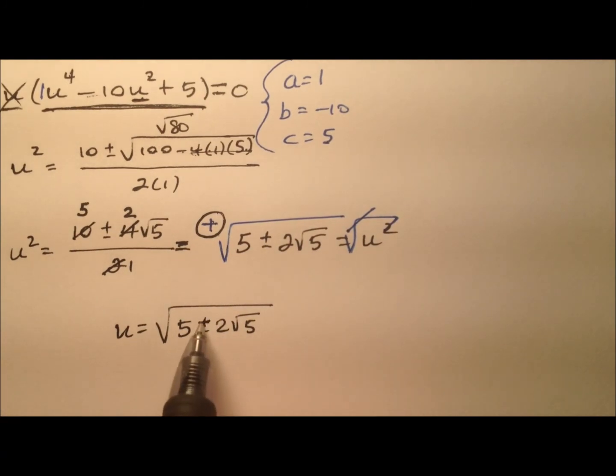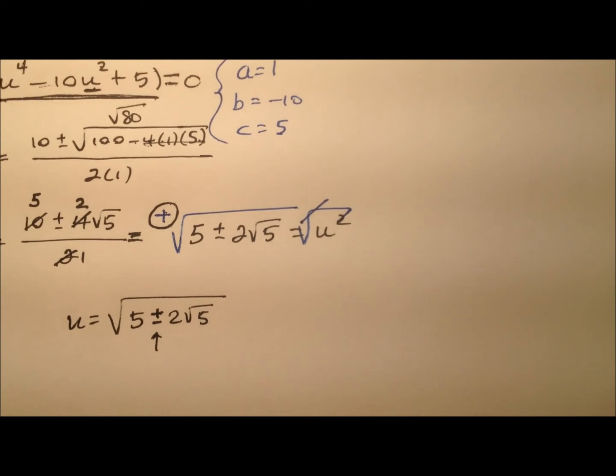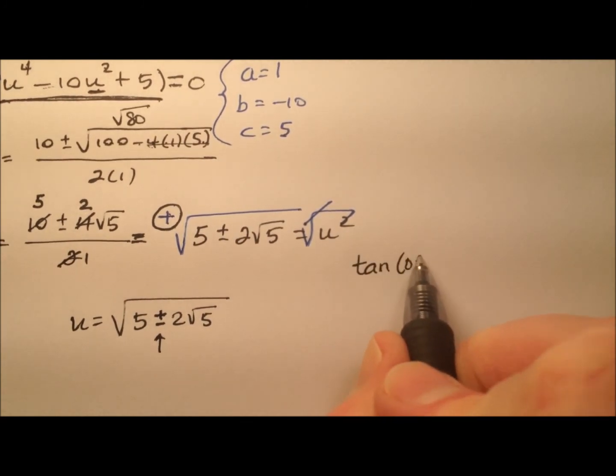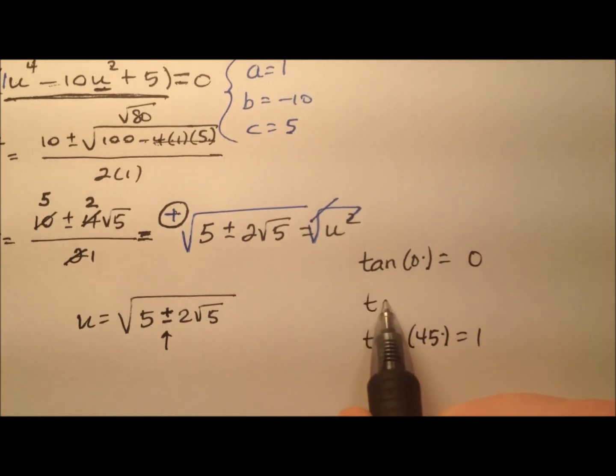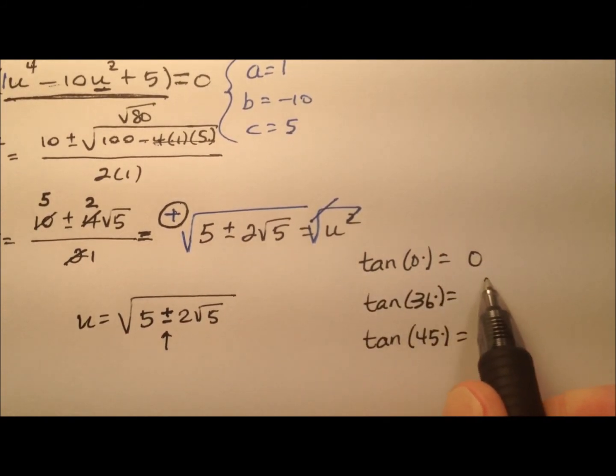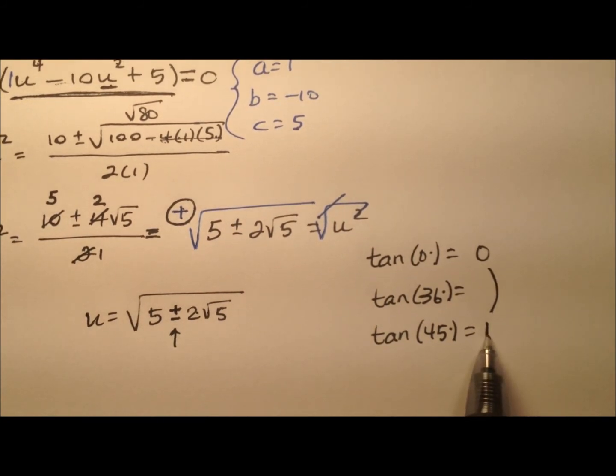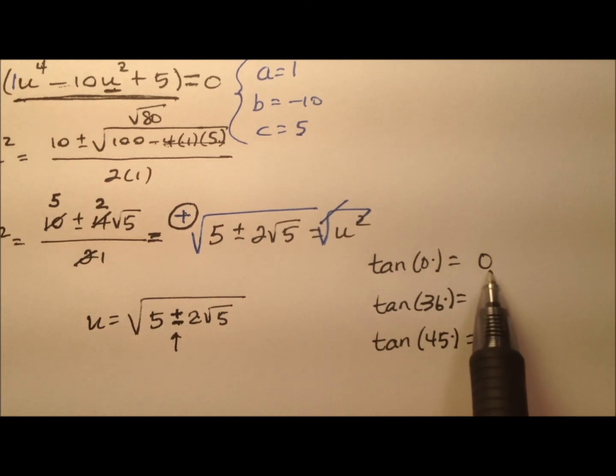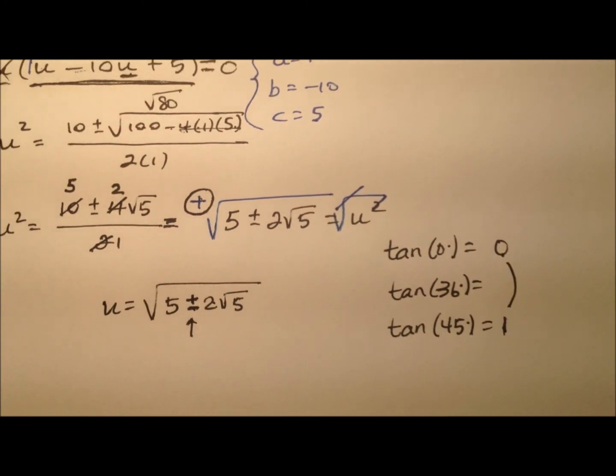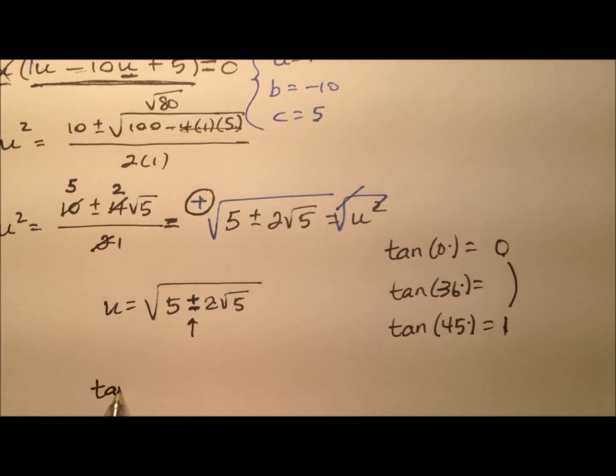So we see that u equals the square root of 5 plus or minus 2 radical 5. Well, another interesting situation, what do we do with this plus or minus in here? Well, the tangent of 0 degrees is 0 and the tangent of 45 degrees equals 1. So if we're looking for the tangent of 36 degrees, it's going to have to be between 0 and 1. If we use 5 plus 2 radical 5 and do the square root of that, that's going to be bigger than 1. But if we use the minus, then it will be between 0 and 1. So we're going to say here that the tangent of 36 degrees is the square root of 5 minus 2 radical 5.